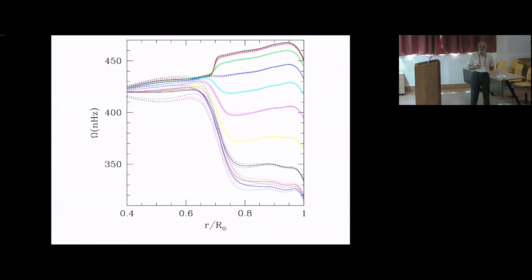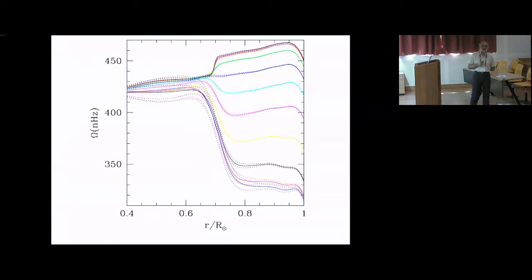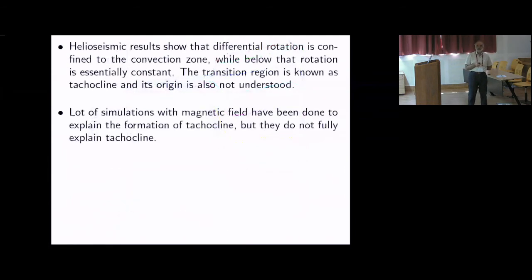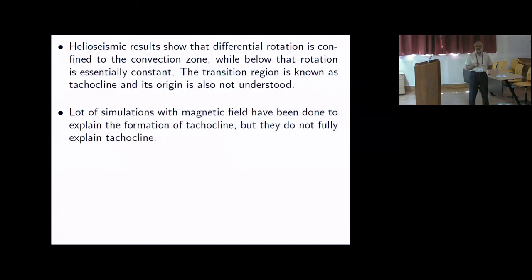The rotation rate in the core is not much larger than the surface rotation rate. If the core were rotating significantly faster, the Sun would have a significant quadrupole moment, giving rise to precession of Mercury's perihelion and disturbing agreement with relativity — which some people had suggested. The helioseismic measurement shows that is not the case. Simulations with magnetic field have been done to explain the formation of the tachocline, but they do not fully explain it. The angular momentum transport in the solar interior is still not understood.